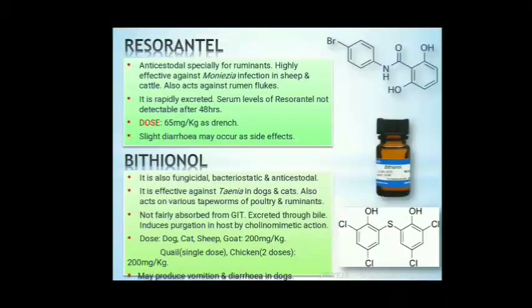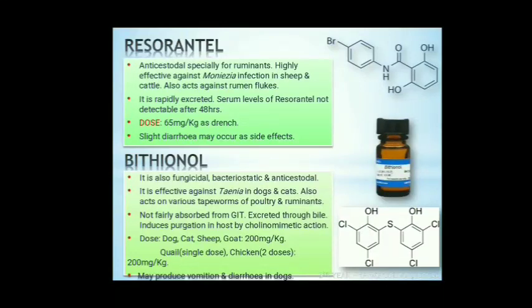Next is resorantel. Resorantel is an anti-cestodal specially for ruminants. It is highly effective against Moniezia infection at 90-100% in sheep and cattle. The serum level of resorantel is not detectable after 48 hours of treatment. It is rapidly excreted and 3 days after administration, the total body residue is only 0.10%. Cattle and sheep are given 65 mg/kg as a dose. Side effect may be slight diarrhea.